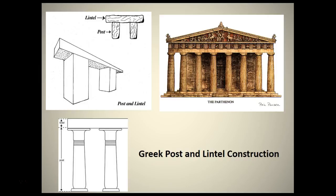One thing I want to distinguish is the essential difference between Greek and Roman architecture. Greek builders revealed the building material itself and accepted design limitations, especially with post-and-lintel construction — two posts and a horizontal lintel, as seen with the Parthenon. Don't get these two structures confused: the Parthenon is Greek, and the Pantheon is Roman. The Pantheon has the dome.